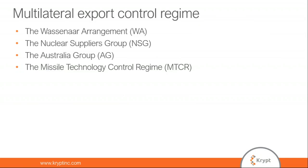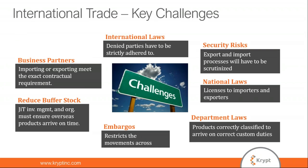The multilateral export control regime is an international body for organizing national export control systems. There are four different control regimes: the Wassenaar Arrangement for conventional arms and dual-use goods and technologies; the Nuclear Suppliers Group for nuclear-related technology; the Australia Group for chemical and biological technology that could be weaponized; and the Missile Technology Control Regime for rockets and aerial vehicles capable of delivering weapons of mass destruction. Key challenges in international trade include international laws, security risks, national laws, department laws, embargoes, reduced buffer stock, and licensing compliance.